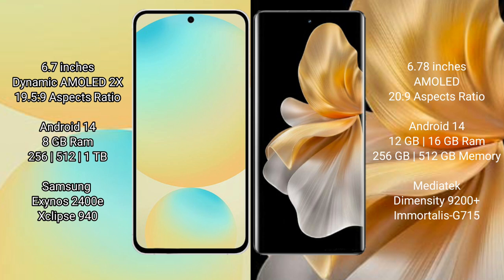The Samsung Galaxy S24 FE offers 8GB RAM with 128GB, 256GB, or 512GB internal storage, powered by the Samsung Exynos 2400E processor. The Vivo S18 Pro offers 8GB, 12GB, or 16GB RAM with 256GB or 512GB internal storage, powered by the MediaTek Dimensity 9200 Plus processor.